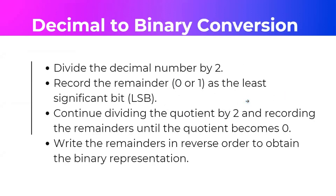Now let's start with the conversion of decimal numbers to other number systems. The main idea of conversion is to divide the decimal number by its corresponding base. To convert decimal to binary, divide by 2. To convert decimal to octal, divide by 8. And decimal to hexadecimal, divide by 16.